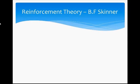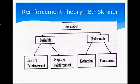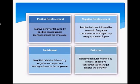The next important process theory is B.F. Skinner's Reinforcement Theory. According to him, there are two types of behavior: desirable behavior and undesirable behavior. Desirable behavior has to be repeated and undesirable behavior has to be eliminated. Desirable behavior can be made to repeat by either positive reinforcement or negative reinforcement. Undesirable behavior can be eliminated either by extinction or by punishment. Positive reinforcement means positive behavior followed by positive consequences — for example, a manager praises the employee, so the employee will definitely repeat that positive behavior.